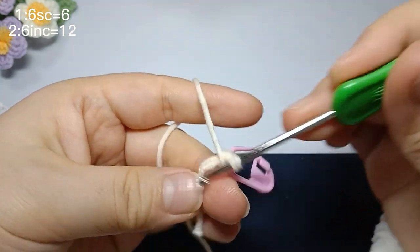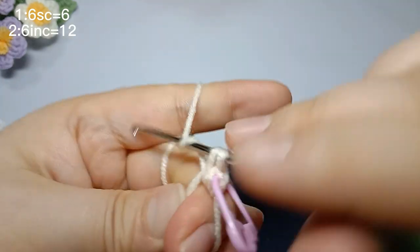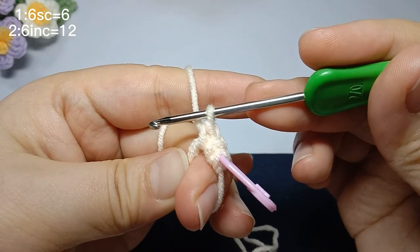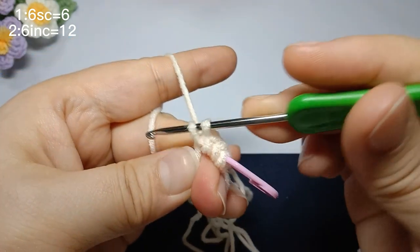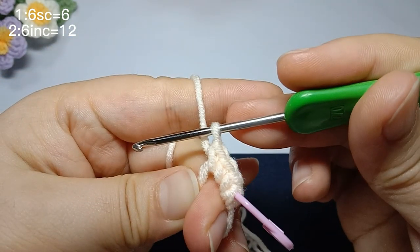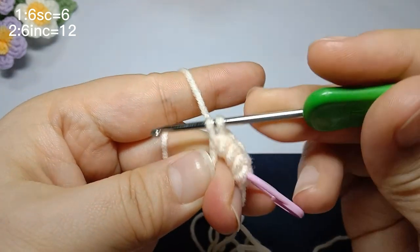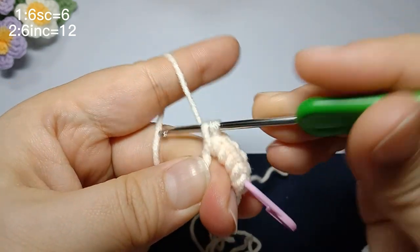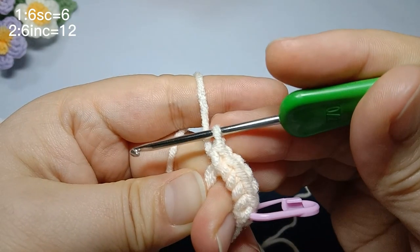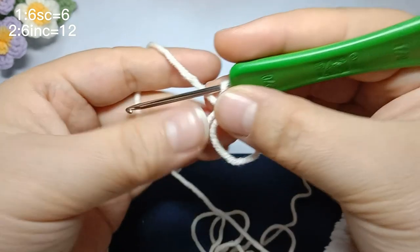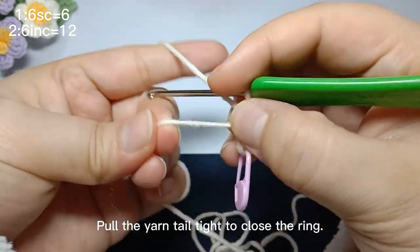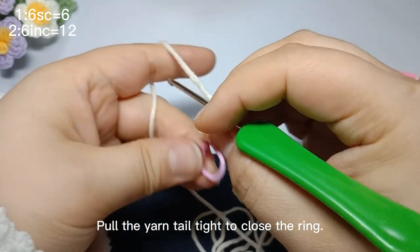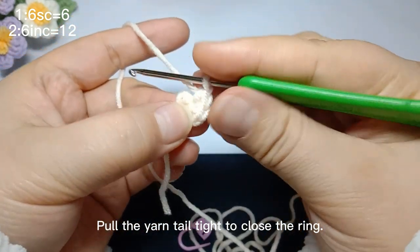Place the marker in the first stitch. Pull the yarn tail tight to close the ring. Remove the marker.